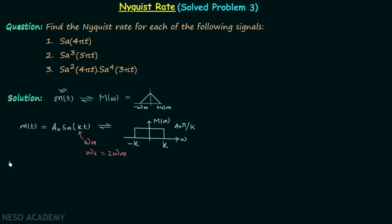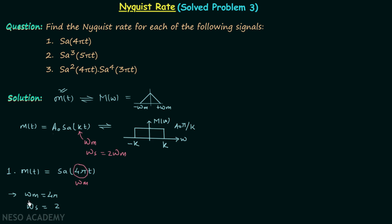Now for the first signal, m(t) = sinc(4πt). Comparing with the standard sampling function a₀·sinc(kt), we find a₀ equals 1, and comparing kt with 4πt we get k = 4π. So ωm equals 4π radians per second. The Nyquist rate ωs equals 2 times ωm, which is 2 times 4π, giving us the Nyquist rate of the first signal as 8π radians per second.